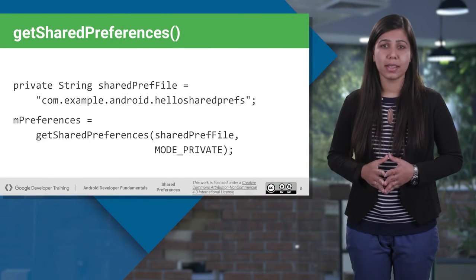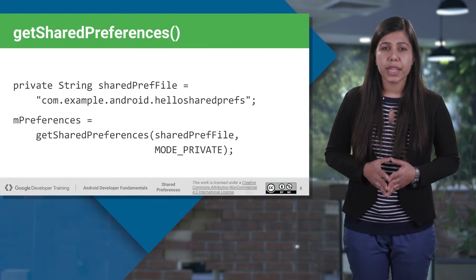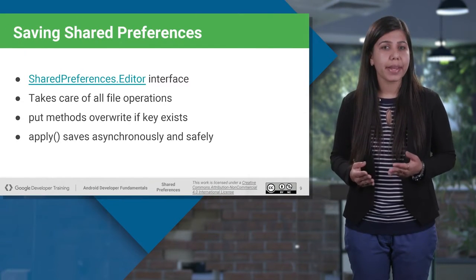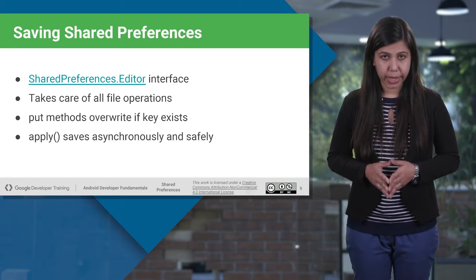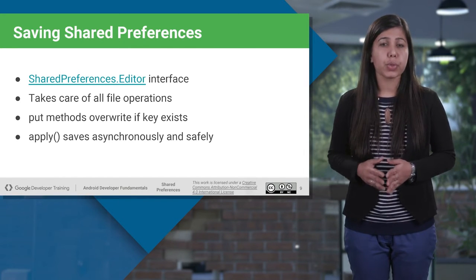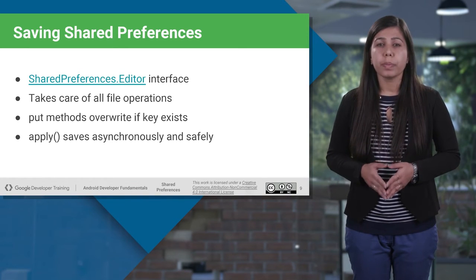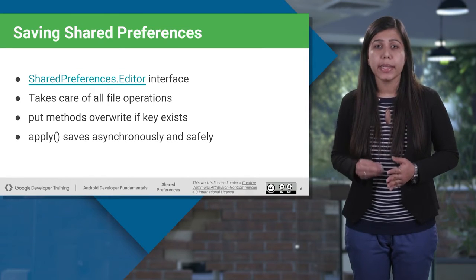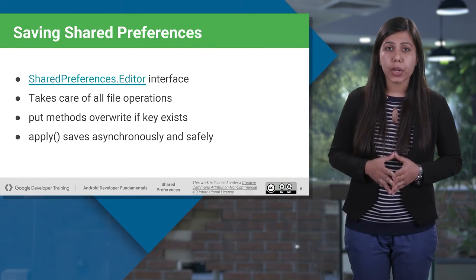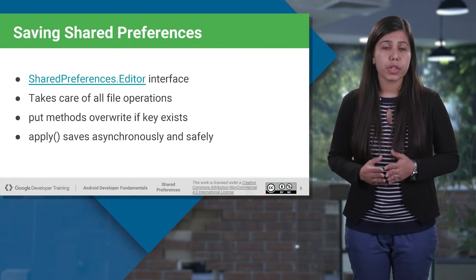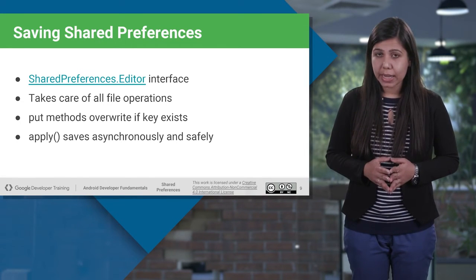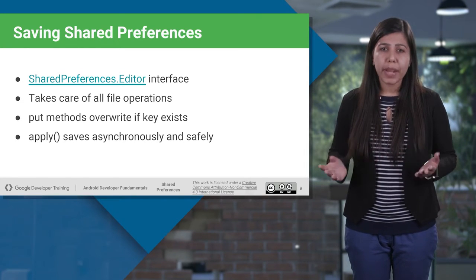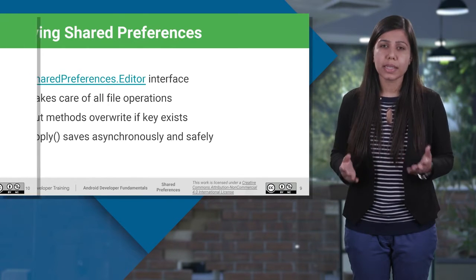To get an instance of Shared Preferences, use the GetSharedPreferences method, which takes two parameters: the name of the preference settings (that is, the Shared Preferences file) and the mode. If you want to edit or save any value to the Shared Preferences file, you need to get a reference to the Shared Preferences editor. This editor is an interface that allows you to edit the data inside the Shared Preferences file and handles all the file operations. Whatever changes you make inside the editor will be reflected back in the Shared Preferences file once you call the apply method.